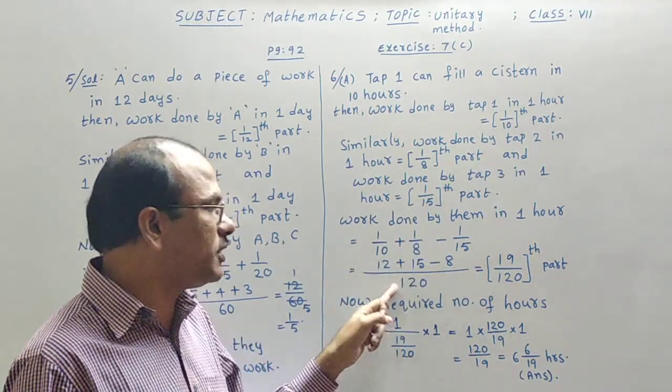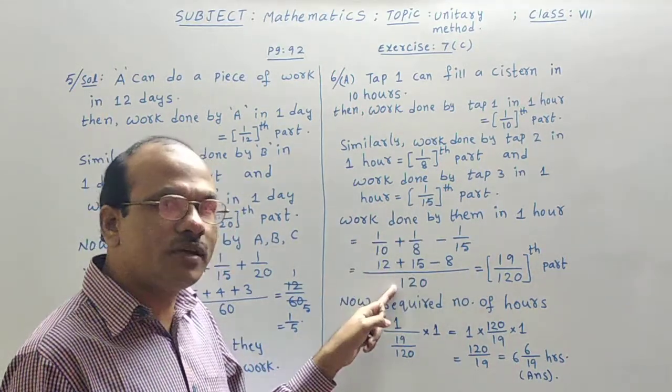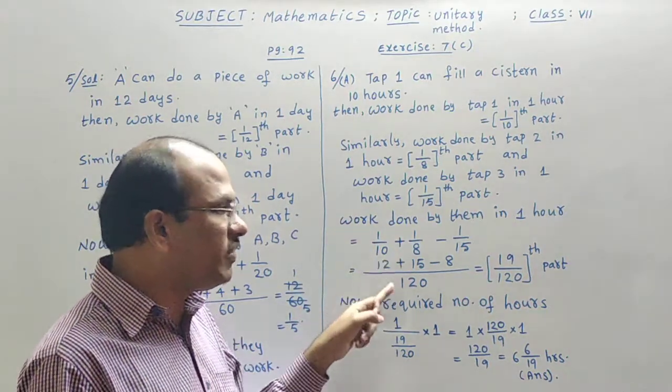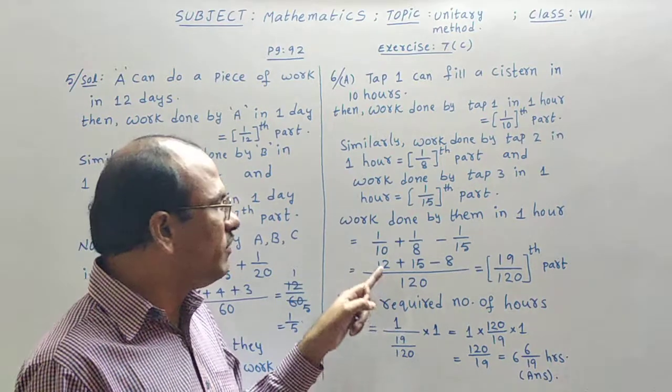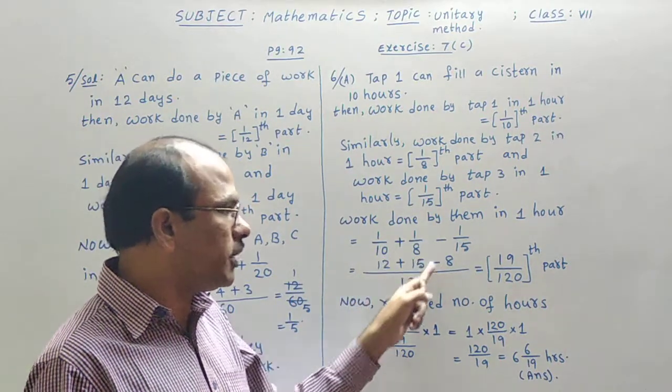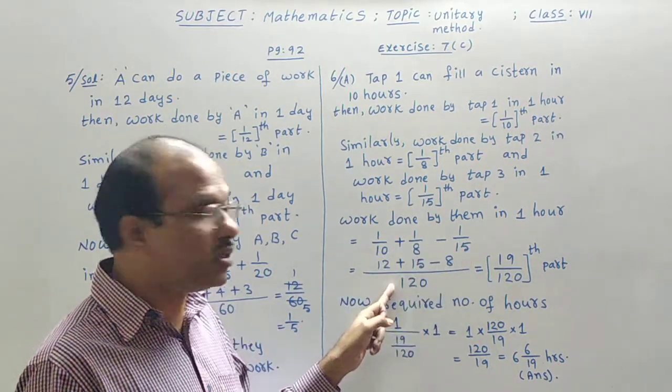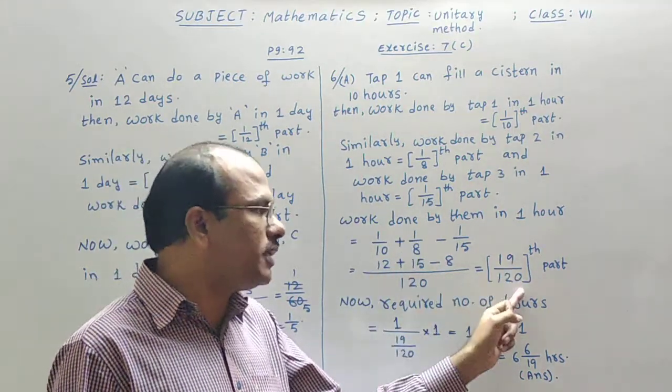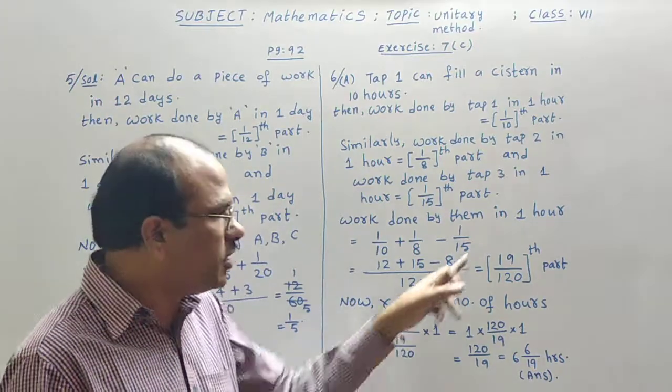LCM is 120. 10, 12's are 120. 12, once 12. Plus, 8, 15's 120. 15, once 15. Minus, 15, 8's are 120. 8, once 8. Then the simplification gives you 19 by 120.